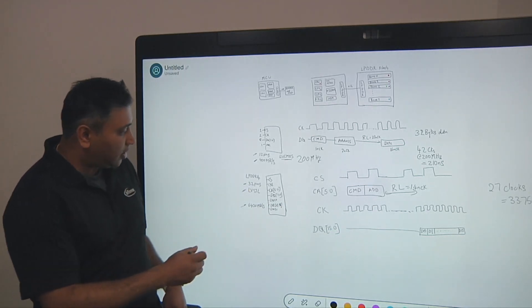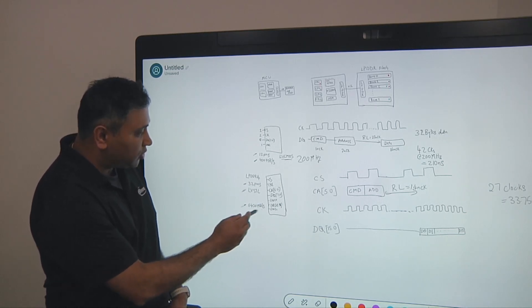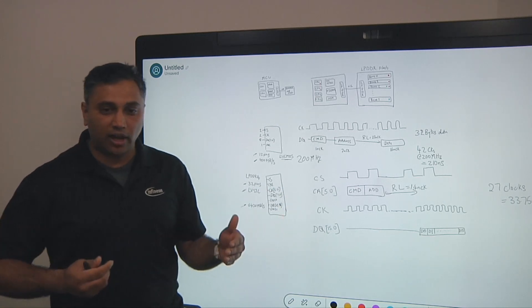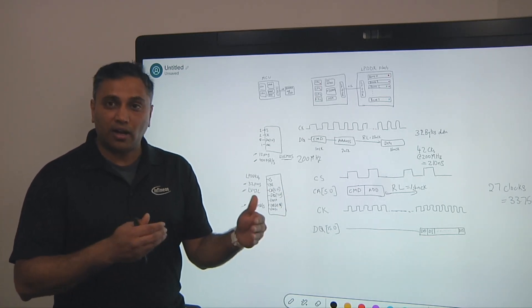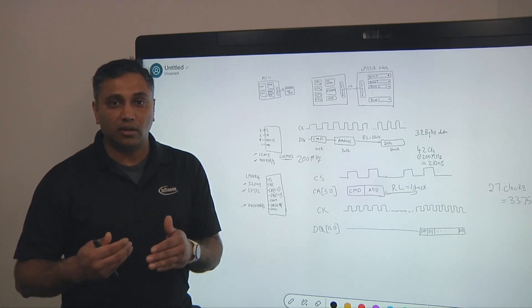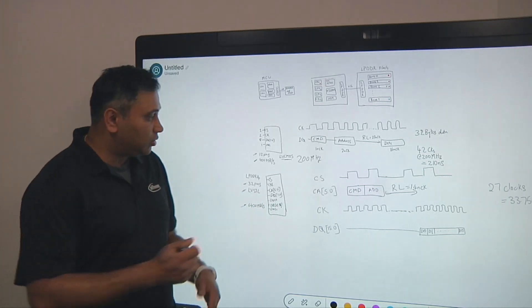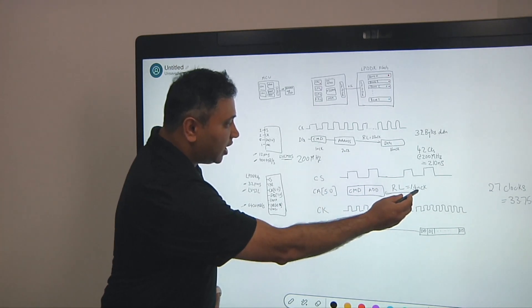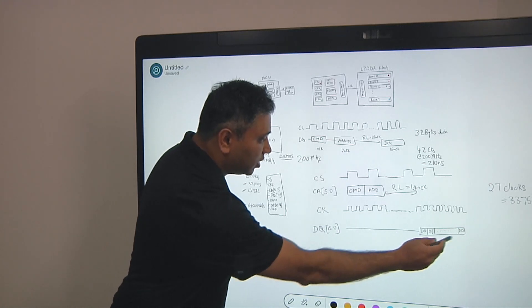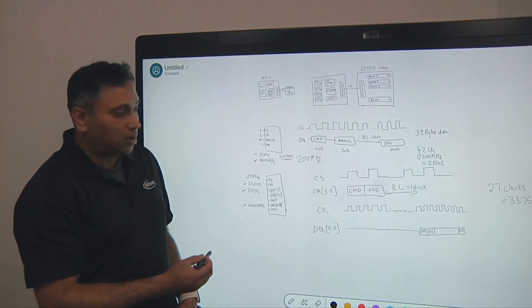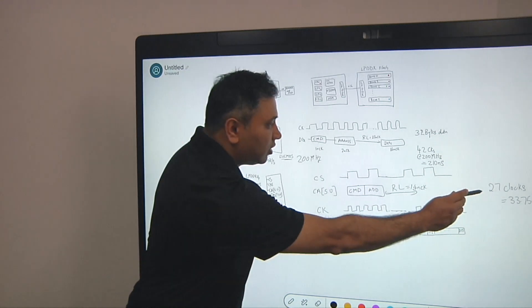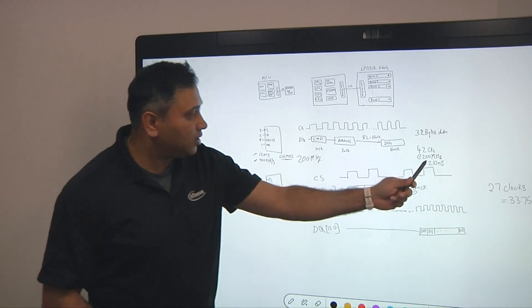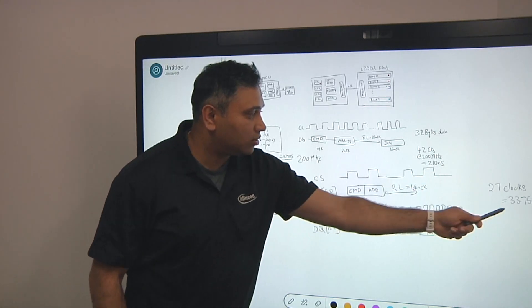So if you take a look at that, you have about 32 pins that gives you about 6,400 megabytes per second. So how does this benefit? The key factors, you have the command address bus that is different than the data bus. So what it allows you to do is have command and address for what you're trying to fetch. And you can have a read latency cycle. You can get your data on your DQ bus. This gives you about 27 clocks at 33.75 nanoseconds. You can see the difference in performance going from 210 to 33.75.